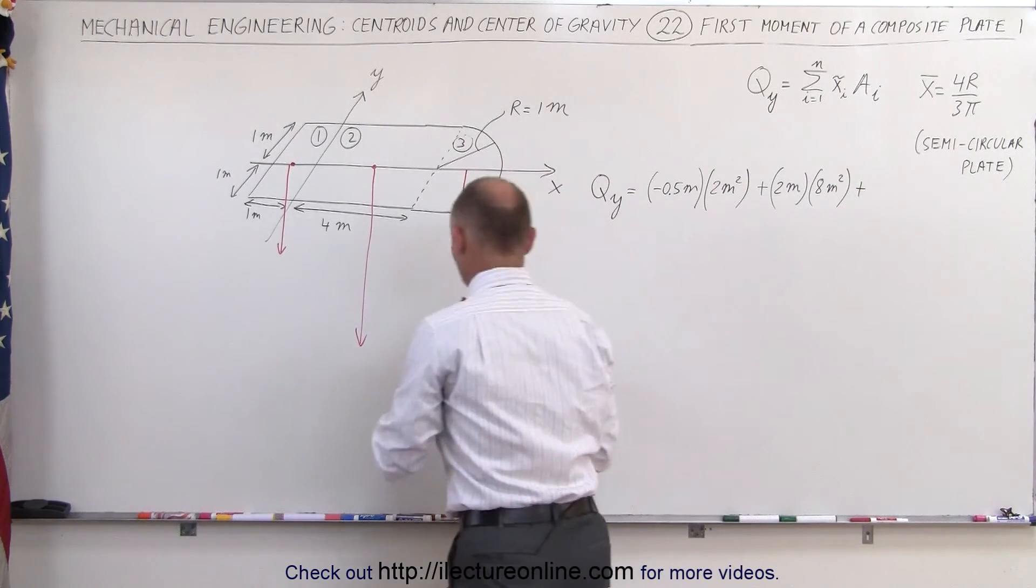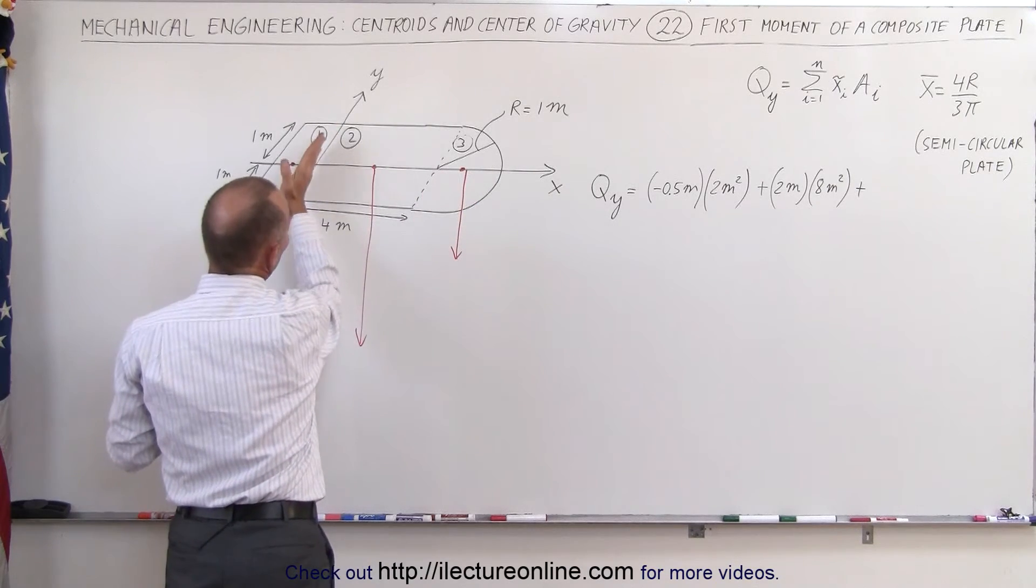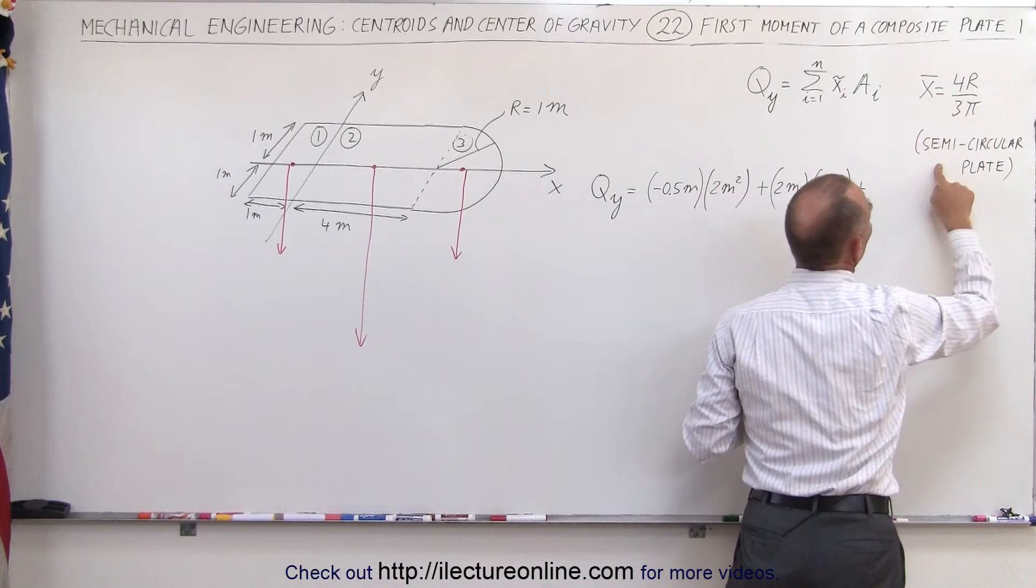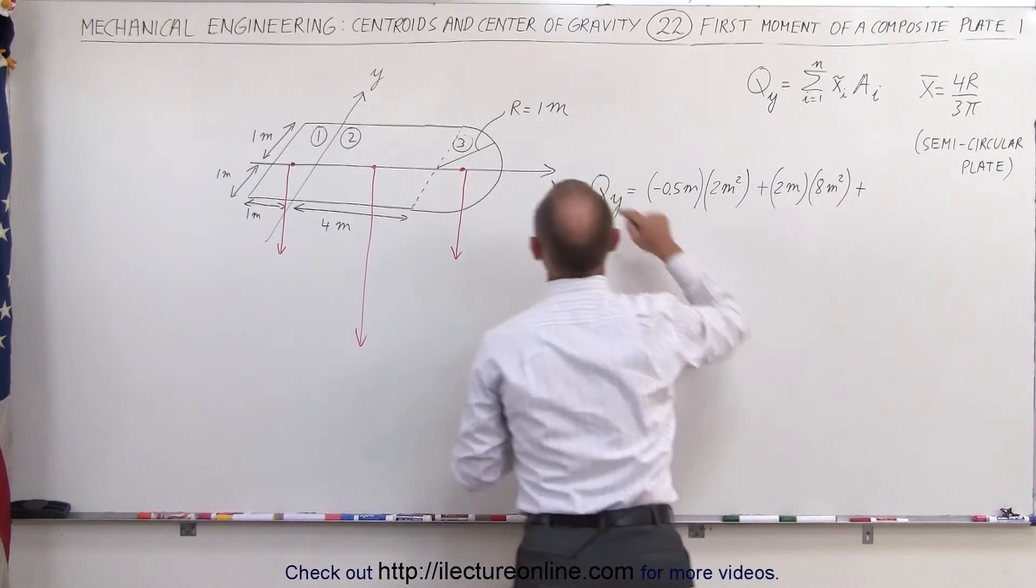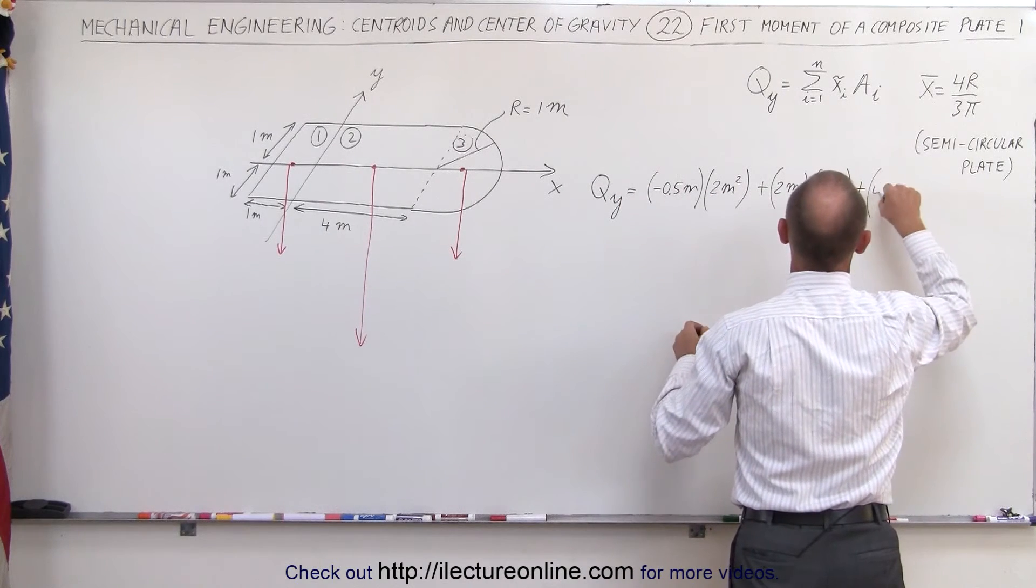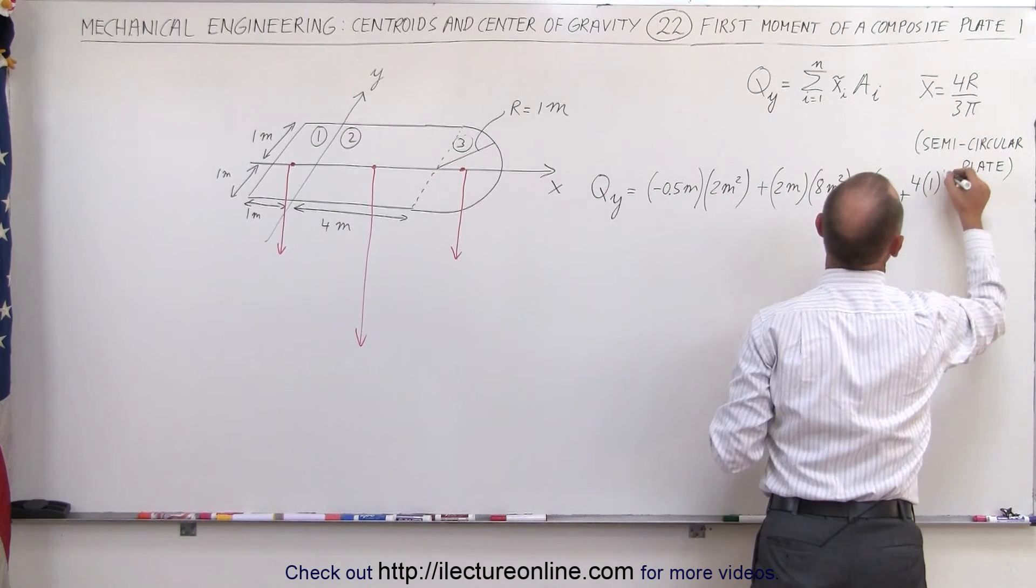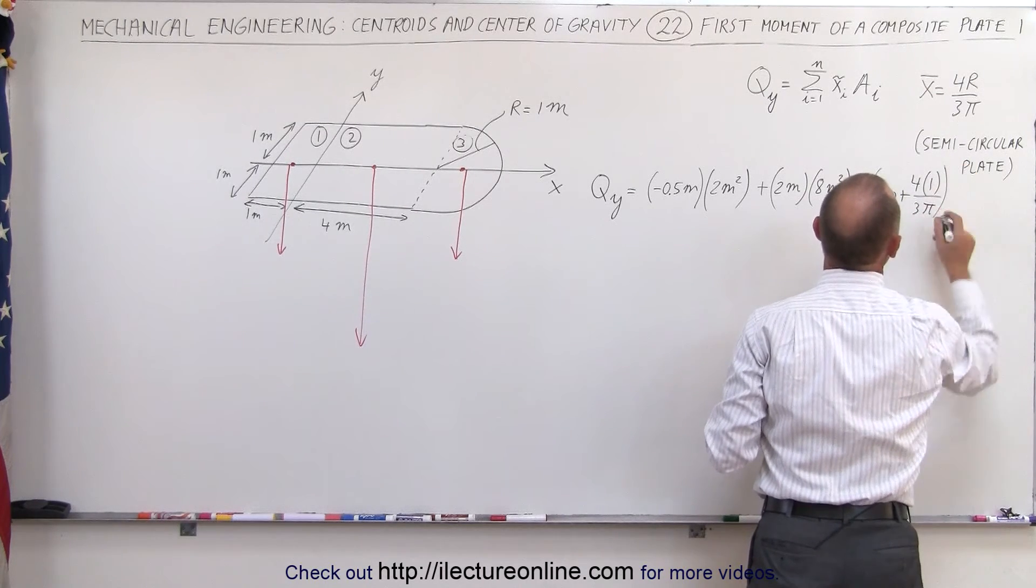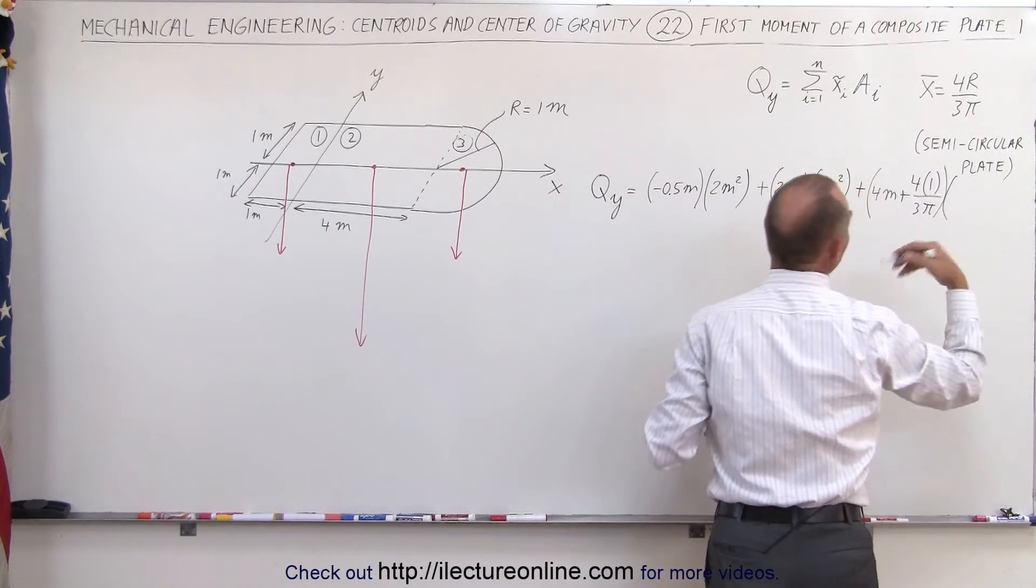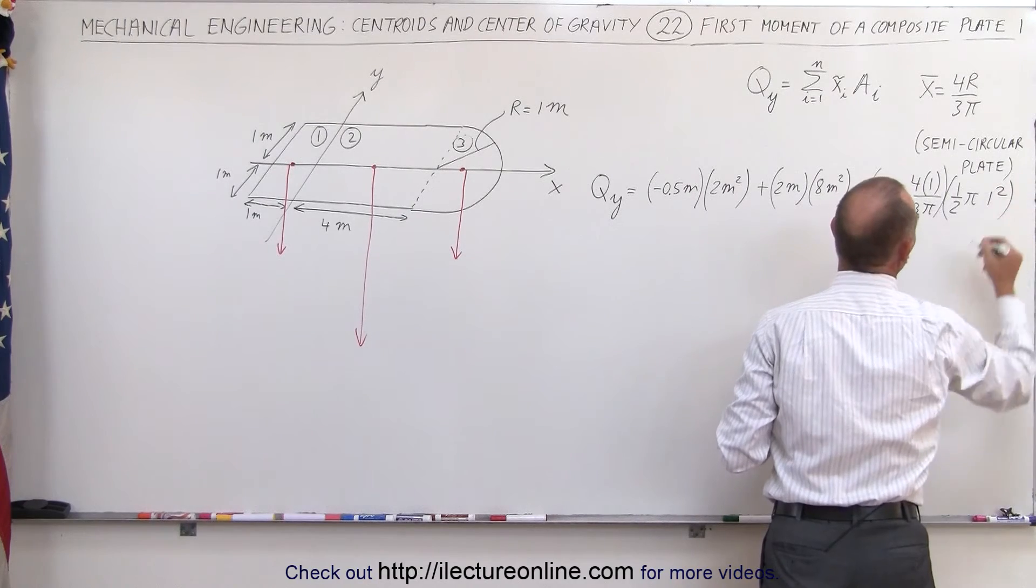Then we add the third piece. We need to find the center mass of that piece, which is right here somewhere, and it's relative to the y-axis, so it would be 4 meters plus this distance, and that distance can be defined by the x-coordinate of the semicircle plate is 4 times the radius divided by 3π. That would be relative to this line here. So we add the two distances together, 4 meters plus 4 times the radius, the radius is 1 meter, so 1 meter divided by 3 times π. That is the distance from the y-axis to the center mass of that semicircular area. We multiply that times the area, which is 1/2 times π times the radius squared, the radius is 1 meter, so we say 1 meter squared.